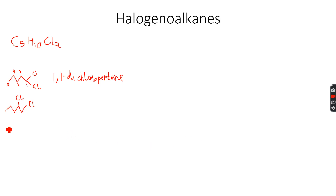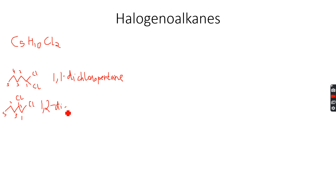We have a chlorine on the second carbon atom. If you number the carbon atoms one, two, three, four, and five, the longest chain still has five carbon atoms. There is one chlorine atom on the first carbon and the other chlorine atom on the second carbon, so this becomes 1,2-dichloropentane.